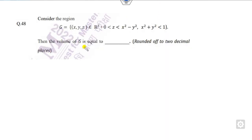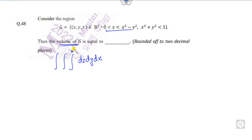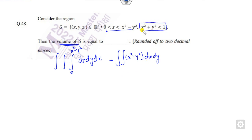Look at another one. Your target is to find the volume, that is ∫∫∫ dz dy dx, and limits are given. You can take the limits as given here. This is nothing but ∫∫ (x² − y²) dx dy. The limits can be taken from 0 to √(1 − x²) and then 0 to 1 and then integrate.